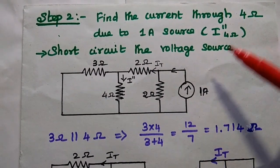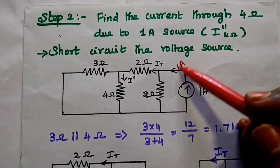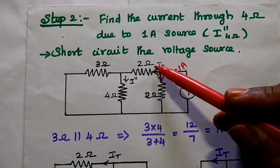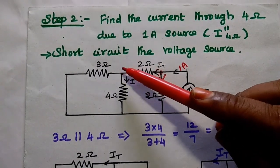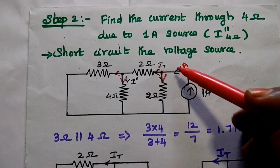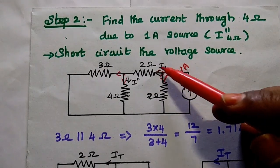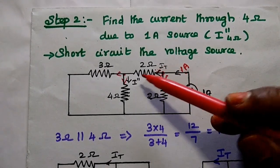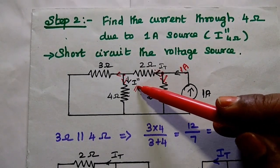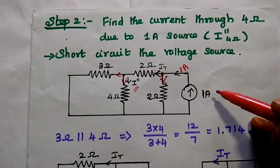We consider only the current source while the voltage source is short-circuited. Here the total current flowing through the circuit is 1 ampere. At this point the current is getting divided, and it further divides between these two branches. The total current from the source is 1 ampere, divided between these two branches. We want to find I double dash due to this current source.